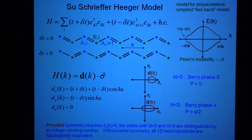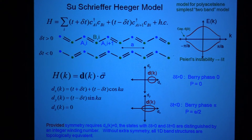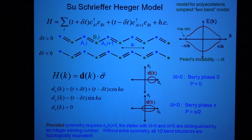Sure, you could have a Berry phase of pi, but you could also have a Berry phase which is anything in between 0 and pi. And there'd be no distinction between this phase and this phase. So there's something about polyacetylene that prevents — that keeps this well defined.